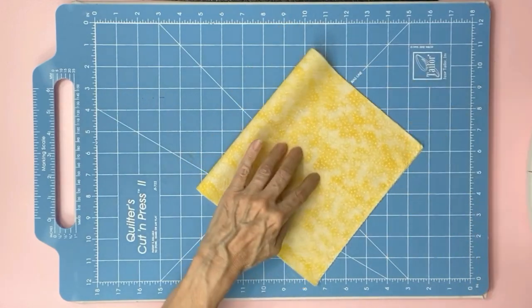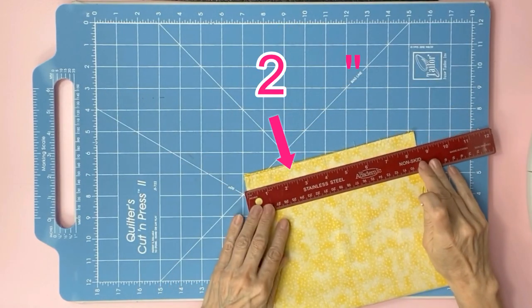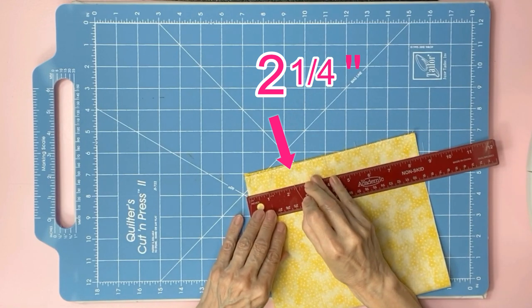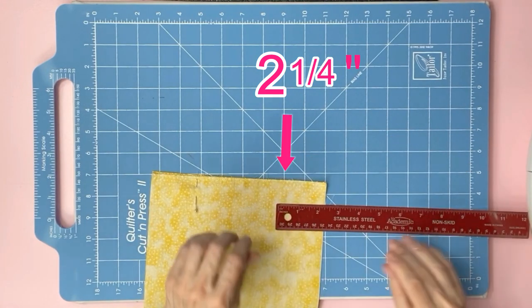Fold your fabric in half. Mark or pin at two and a quarter inch from the side edge. Now do the other side and mark two and a quarter inch.